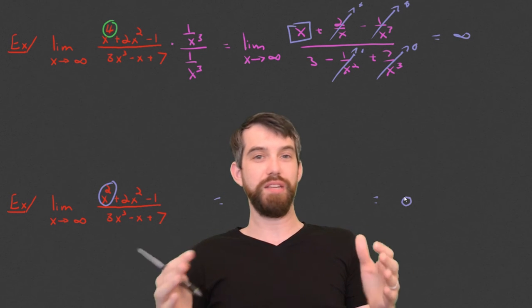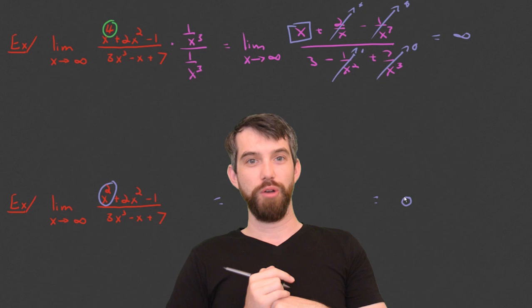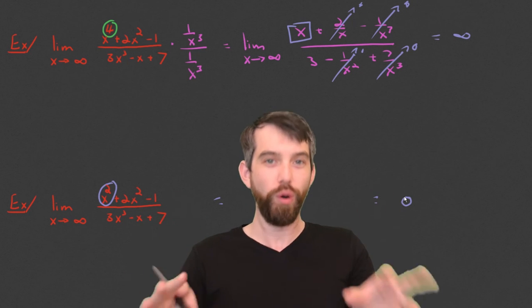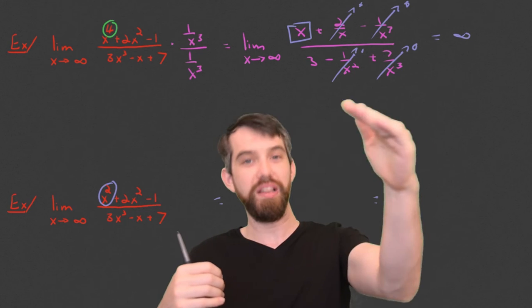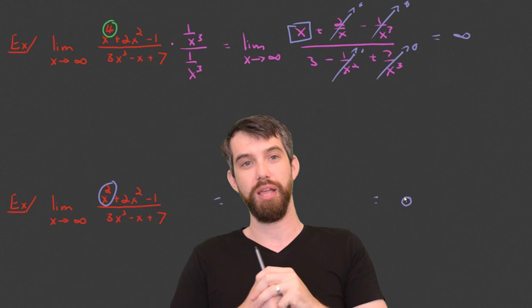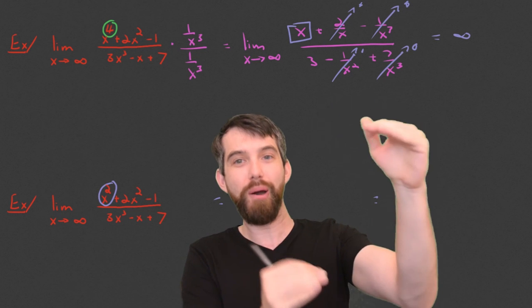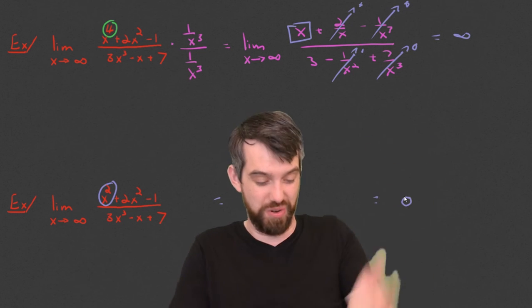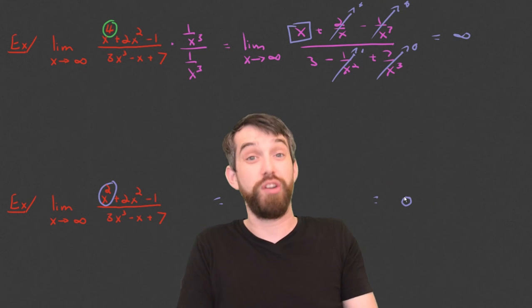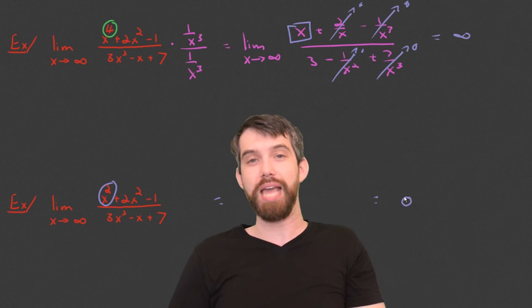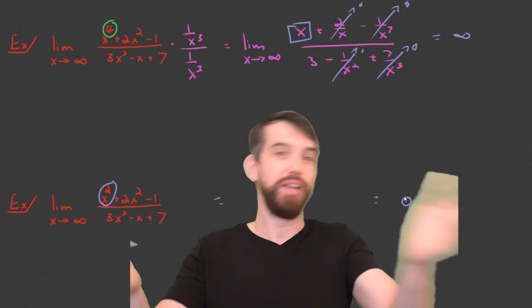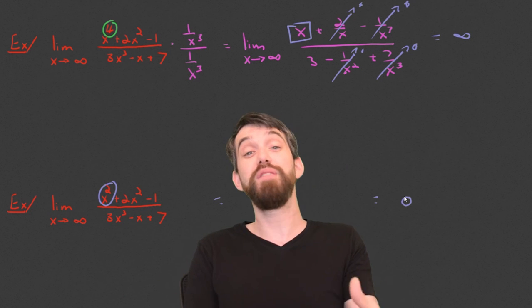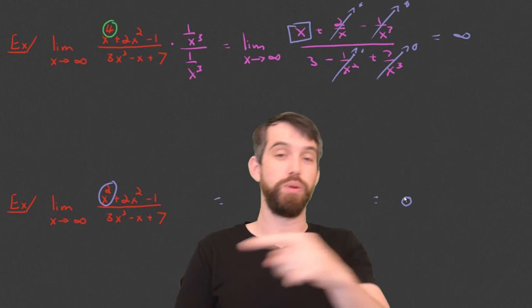So indeed, we've seen that for these rational functions, that we can go through the process formally by finding whatever the highest power is, the top and the bottom, and dividing the top and the bottom by that highest power. And if the top and the bottom are the same power, it's going to resolve to some fraction, and sort of naively we can almost just read it off, although I want you to write down the steps. Or, there's more powers of x on the top, in which case it diverges to infinity, or more powers of x on the bottom, in which case it's pulled down to 0.